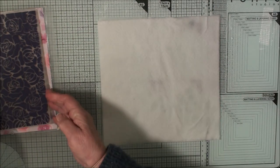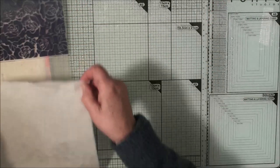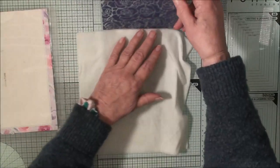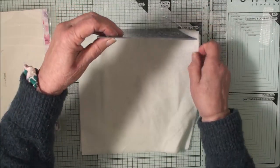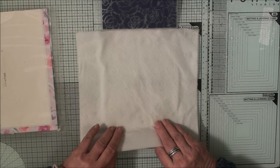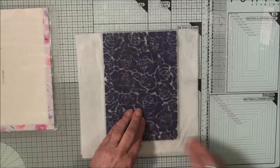Now once I've done that, I can open up my embossing folder and I'm going to lay these inside. So once we've done that, we can close the folder up and all we're going to do with this now is just emboss it through the machine in the folder.